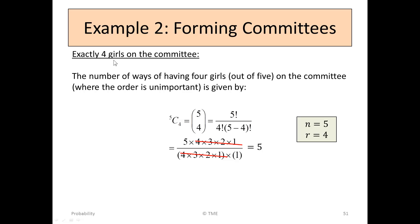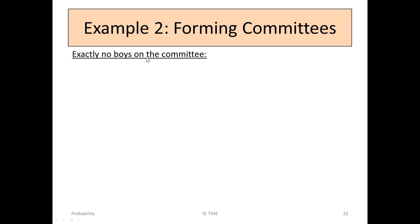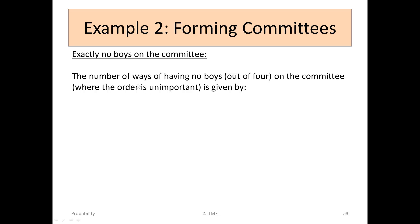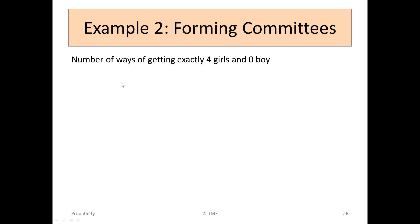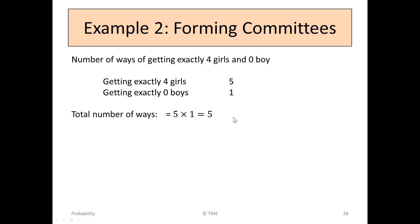If we are getting 4 girls, that means we have no boys. The number of ways of having no boys out of 4 is given by 4C0. 4C0 is 4 factorial over 0 factorial times 4 factorial, which is really 4 factorial divided by 4 factorial, or just 1. So the number of ways of getting exactly 4 girls and no boy is 5 ways of picking the 4 girls times 1 way of having no boys, giving an answer of 5.